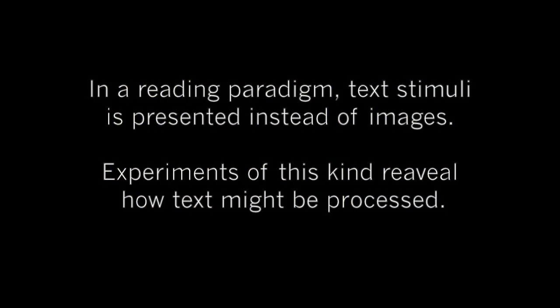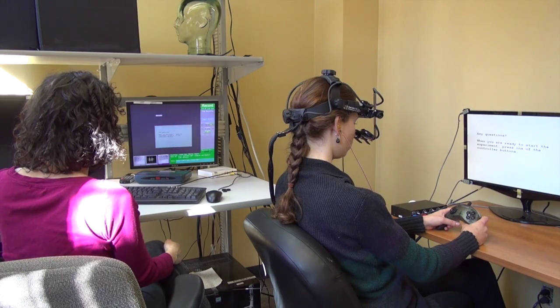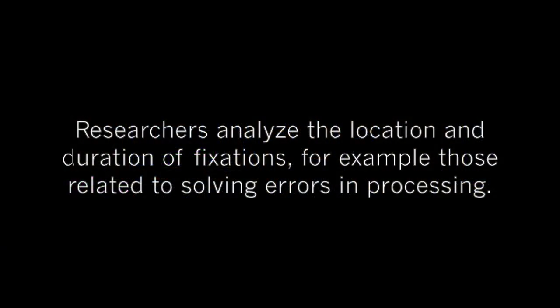In experiments with a reading paradigm, a sentence or passage is presented to the subject. The eye tracker takes note of the area of the display that matches the subject's focal and peripheral vision. This data provides some insight as to how the text is processed. Researchers can analyze the location and duration of fixations, for example those related to solving errors in processing.